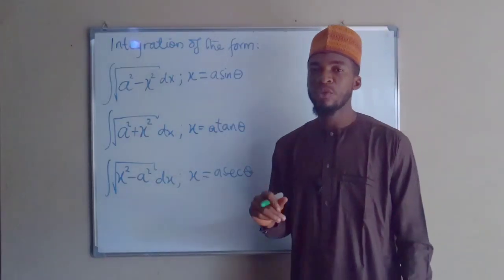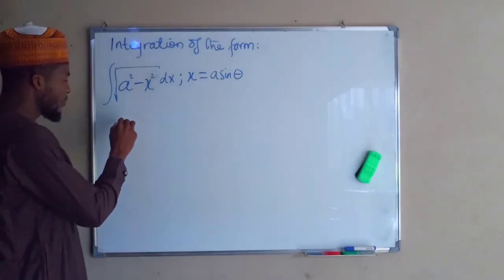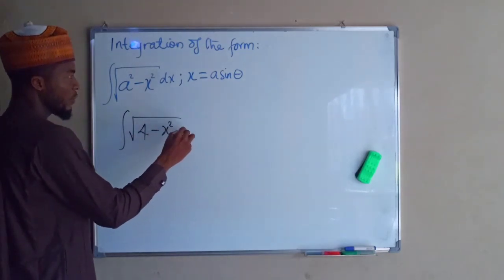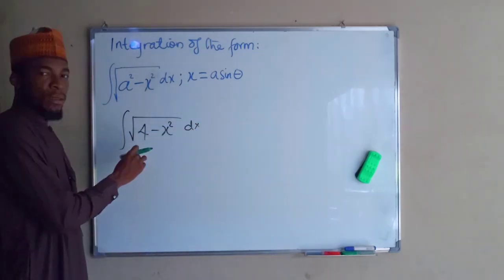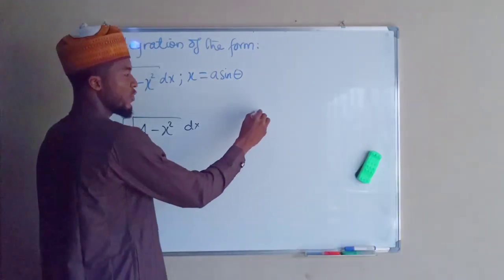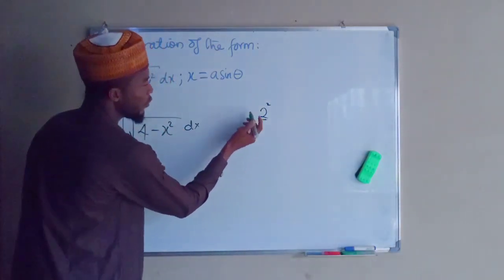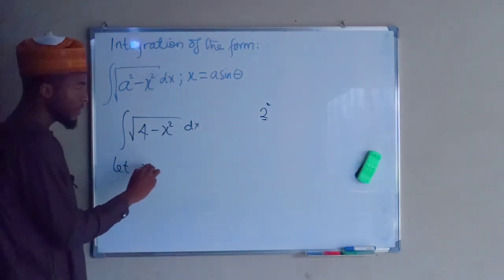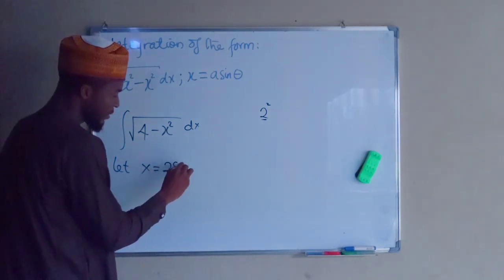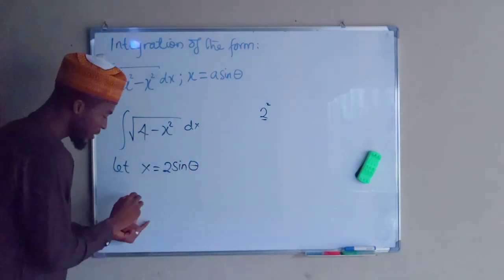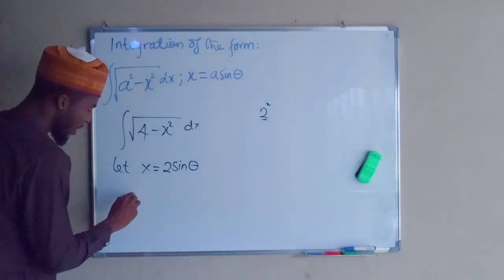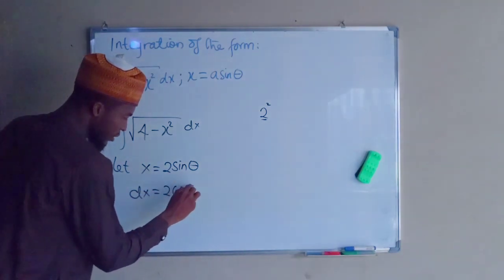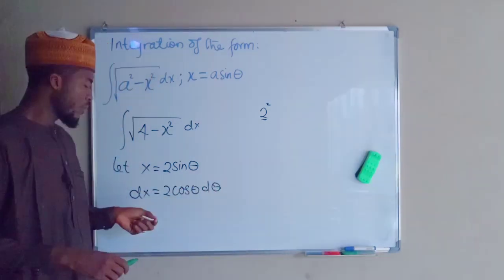Now let us look at the first problem. Suppose we are asked to integrate the square root of 4 minus x squared with respect to x. This 4 can be transformed to index form, which is 2 to the power of 2. Therefore we use 2 as a reference and let x equal to 2 sine theta. The derivative of x with respect to theta gives us dx equals 2 cos theta d theta.